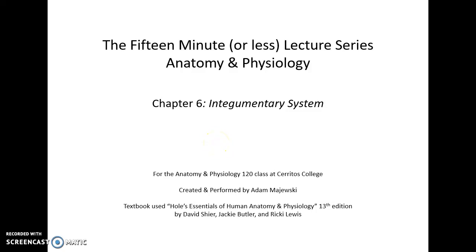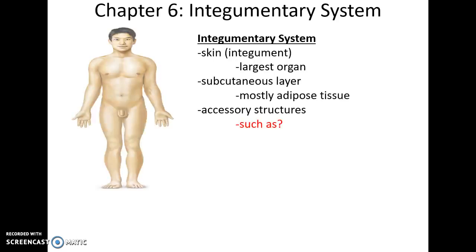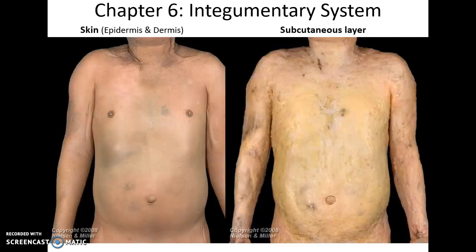This is a 15-minute or less lecture series on anatomy and physiology, chapter 6: the integumentary system. The integumentary system consists of the skin or integument, which is the largest organ of the body, the subcutaneous layer deep to the skin which is mostly made of adipose tissue, and other accessory structures such as hair, nails, sweat glands, and so on.